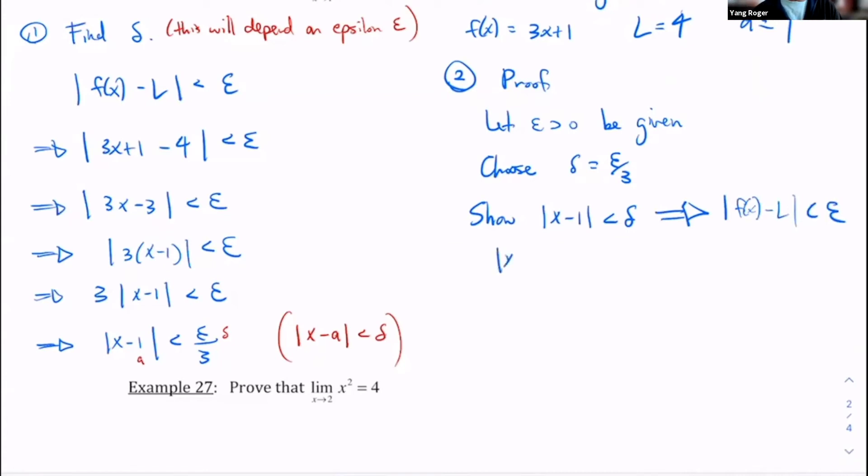So we start off with x minus one less than delta, which is epsilon over three. What does this mean? That's the same thing as three times x minus one is less than epsilon. That's the same thing as saying absolute value of three x minus three is less than epsilon. That's the same thing as saying absolute value of three x plus one minus four is less than epsilon. And that's like saying f of x minus L is less than epsilon.